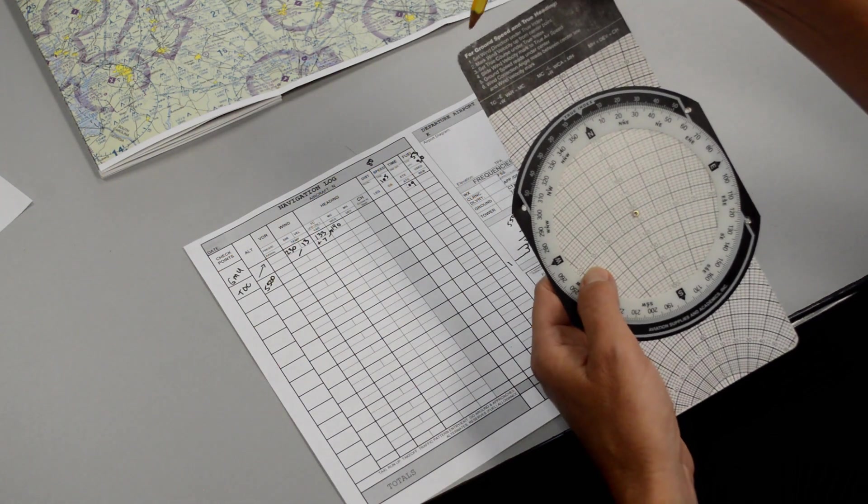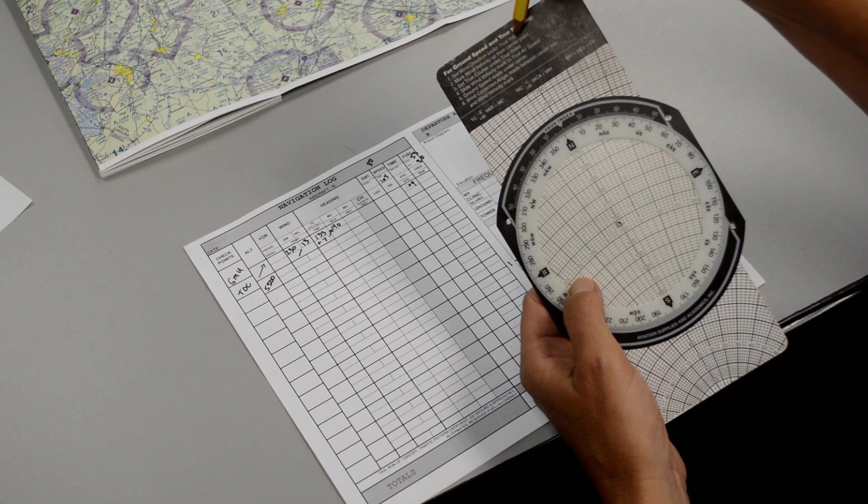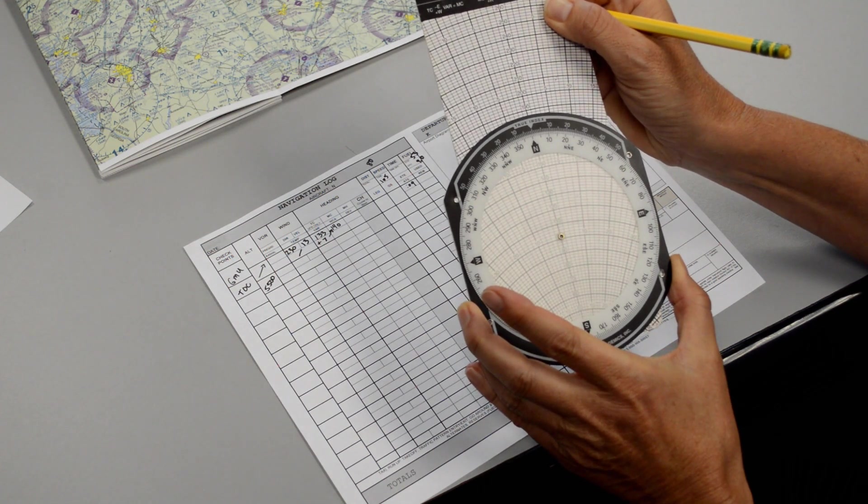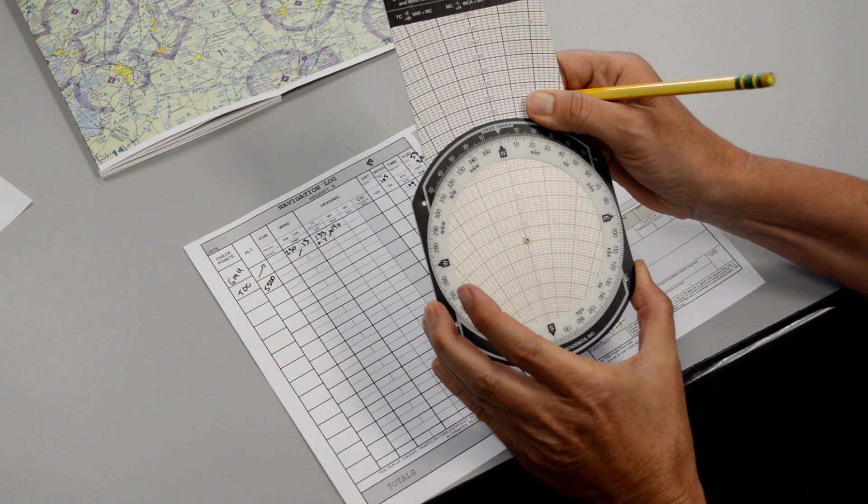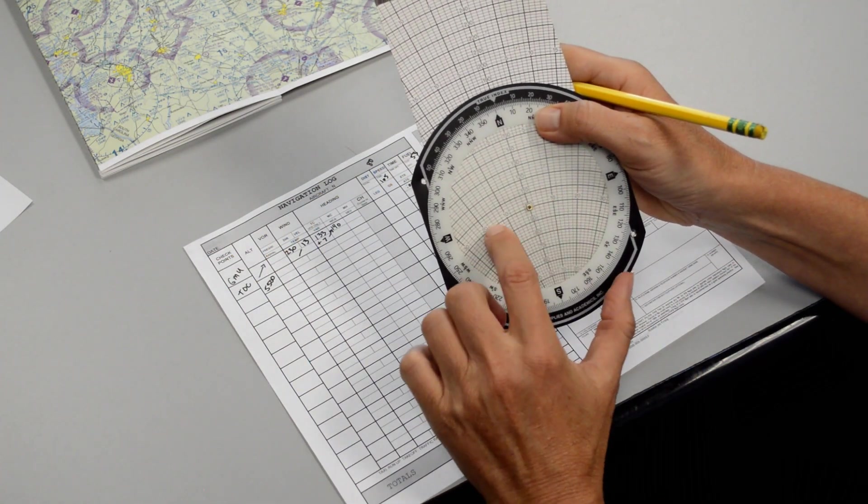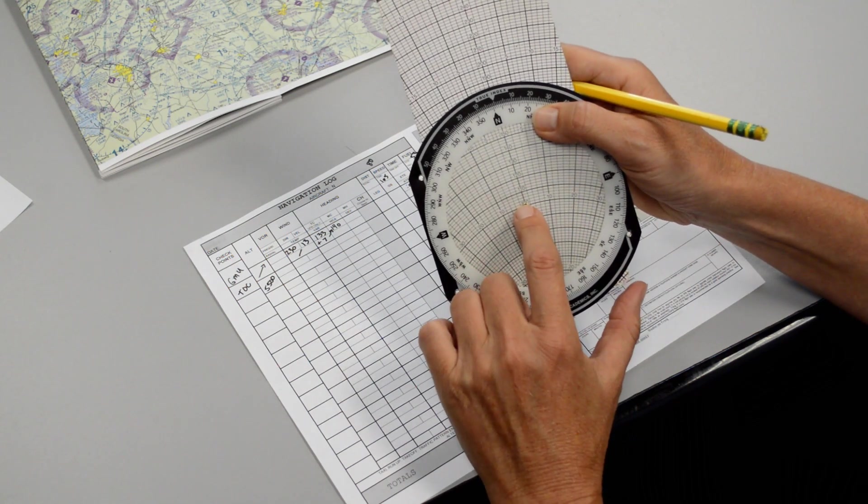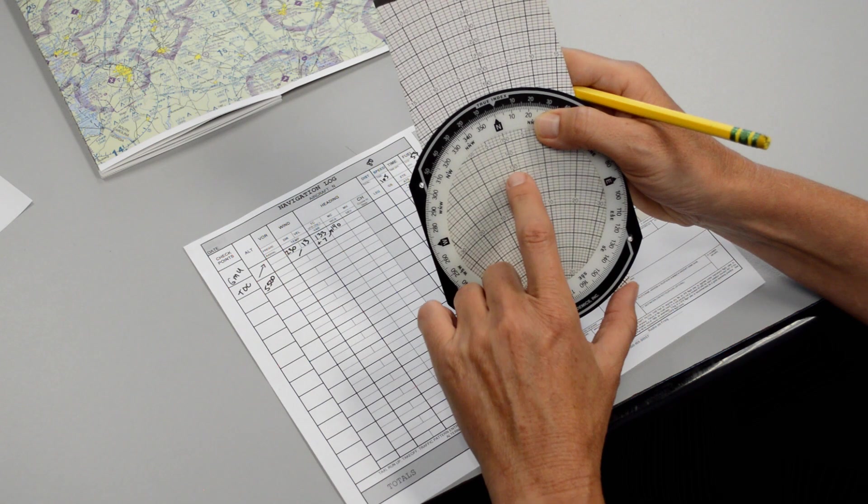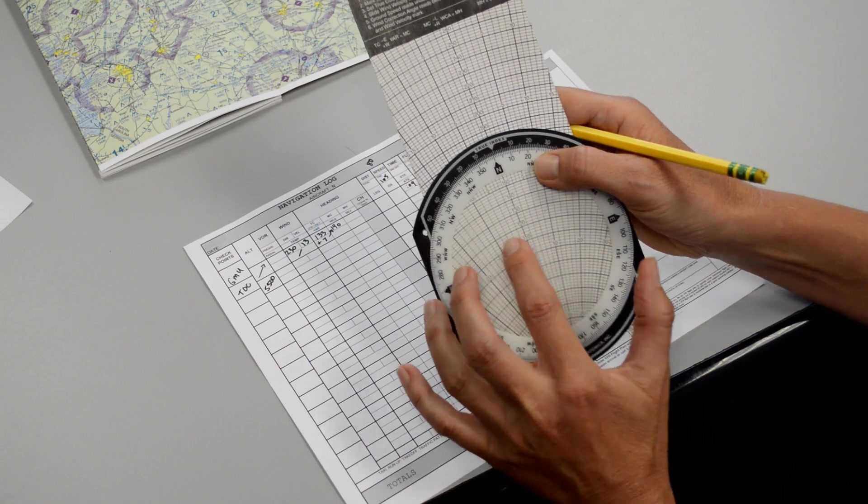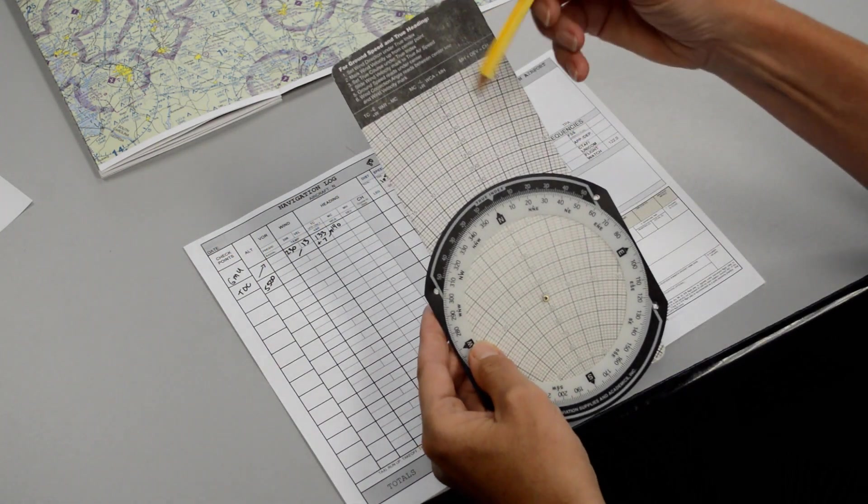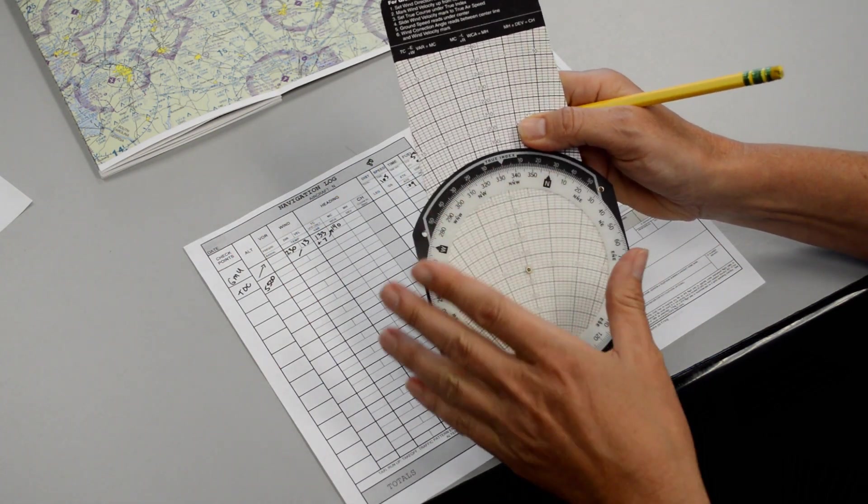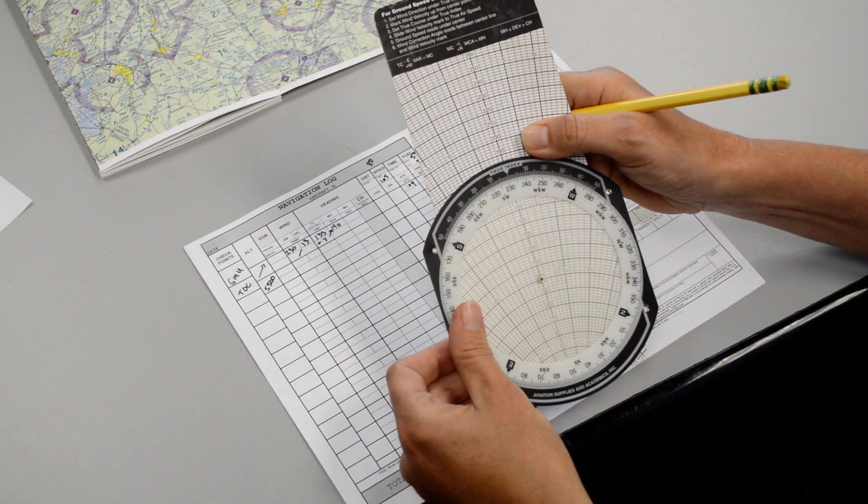So for the climb portion, it says set wind direction under true index. Now, it's best if you start with the center grommet always at 100. Just do that every time, and it helps you avoid some confusion on down the road. When we put the center grommet on 100, we're considering that to be 0, like a starting point. And then we can count up from there, 10, 20, 30, and so on. So the first thing we're going to do is put the center grommet on 100. And then it says set wind direction under true index. True index is at the top of our wheel here, and the wind direction was 230. So we place 230 there.